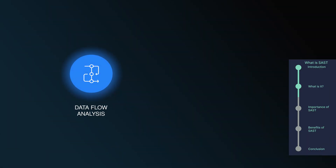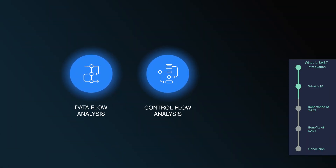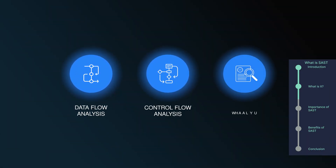SAST tools use methods like data flow analysis, control flow analysis, and pattern matching to scan the code base for known vulnerabilities, coding errors, and insecure coding practices. These tools can detect a wide range of security issues, including input validation errors, cross-site scripting vulnerabilities, SQL injection flaws, buffer overflow, and more.